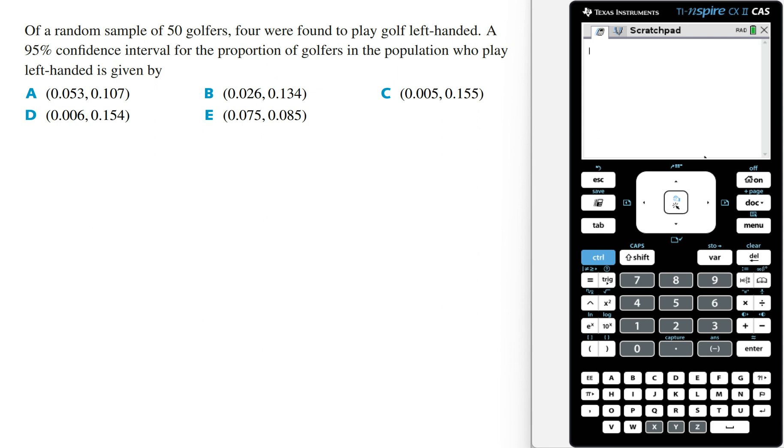So we've got, of a random sample of 50 golfers, 4 were found to play golf left-handed. A 95% confidence interval for the proportion of golfers in the population who play left-handed is given by...